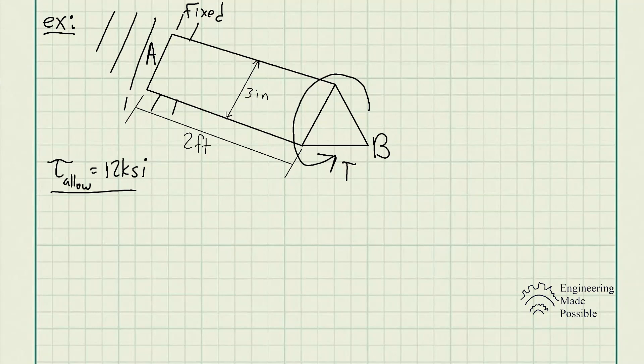The problem statement is, if the shaft has an equilateral triangle cross-section and is made from an alloy that has an allowable shear stress of 12 KSI, or 12,000 pounds per square inch, determine the maximum allowable torque T that can be applied to NB. Also find the corresponding angle of twist of NB.